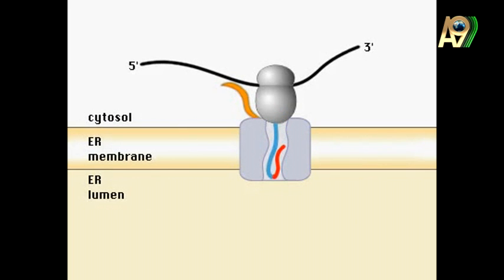Then the signal peptidase protein comes. It cleaves the signal sequence from the right spot and after it cleaves, it goes away. This is very important, it cleaves the signal sequence. If it cleaves one more amino acid, that protein will be useless. If it cleaves one less amino acid, it will be useless again.